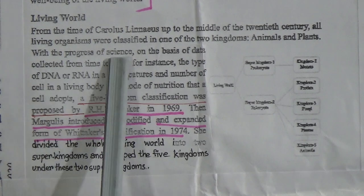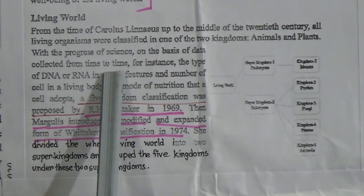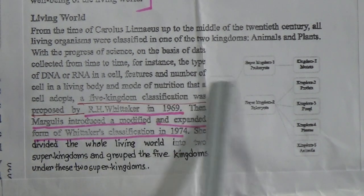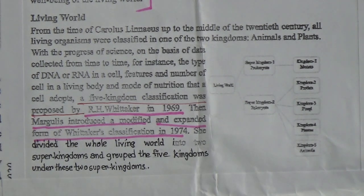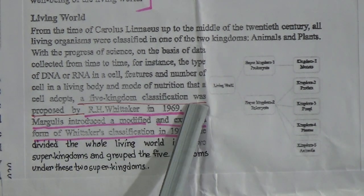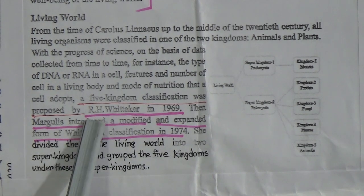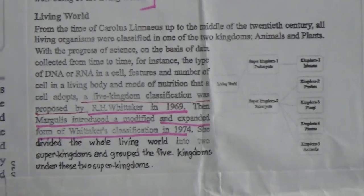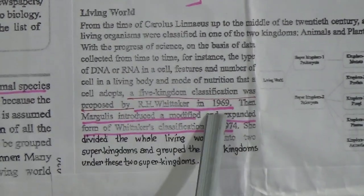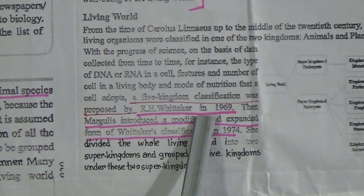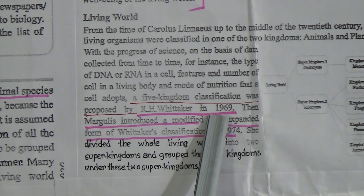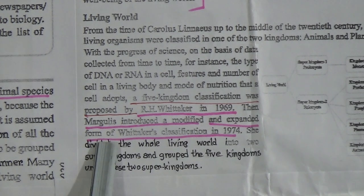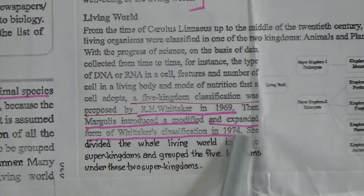With the progress of science and on the basis of data collection over time — for instance, the type of DNA or RNA in a cell, the number of cells in a living body, and the mode of nutrition — a five-kingdom classification was proposed by W. H. Whittaker in 1969. Then Margulis introduced a modified and expanded form of Whittaker's classification in 1974.